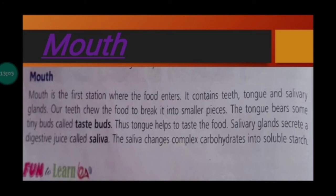Mouth is the first station where food enters. It contains teeth, tongue and salivary glands. Our teeth chew the food to break it into small pieces. The tongue has taste buds that help to taste the food. Salivary glands secrete a digestive juice called saliva. Saliva changes complex carbohydrates into simpler starch.